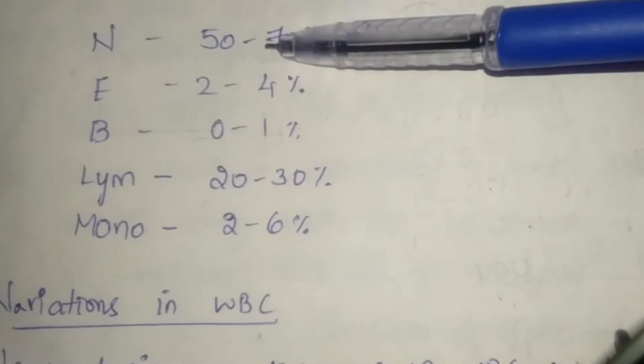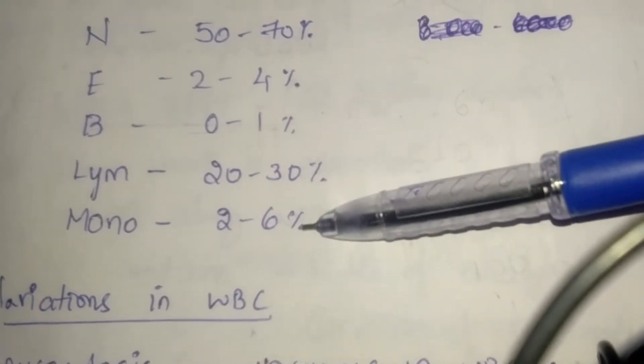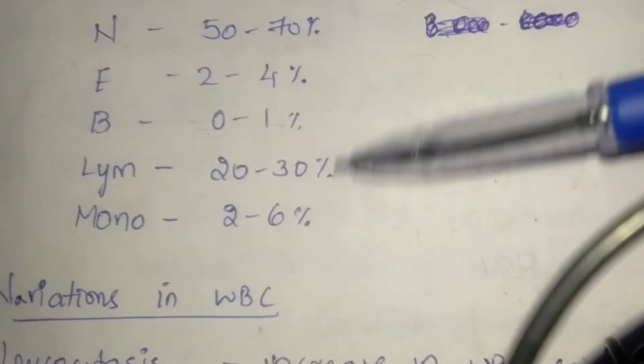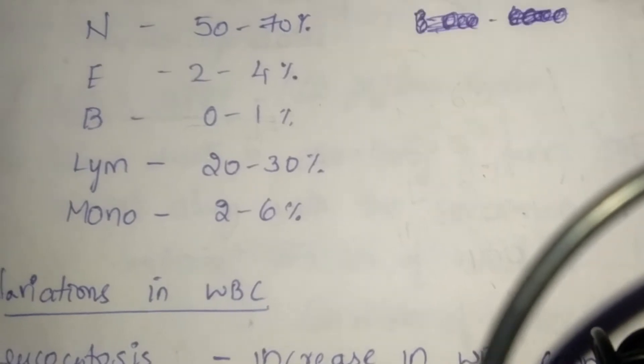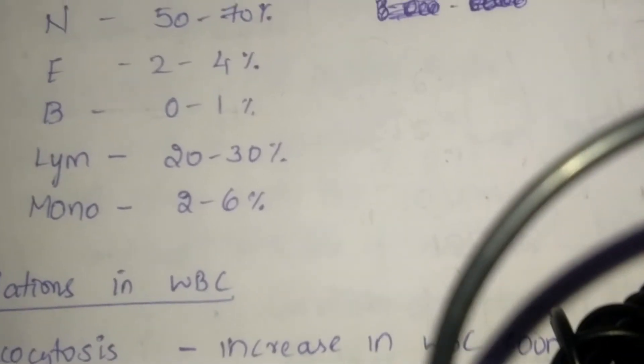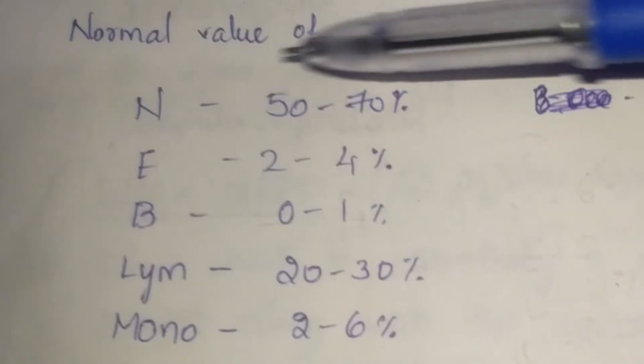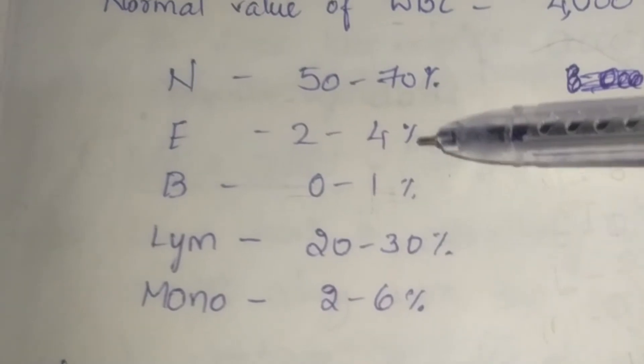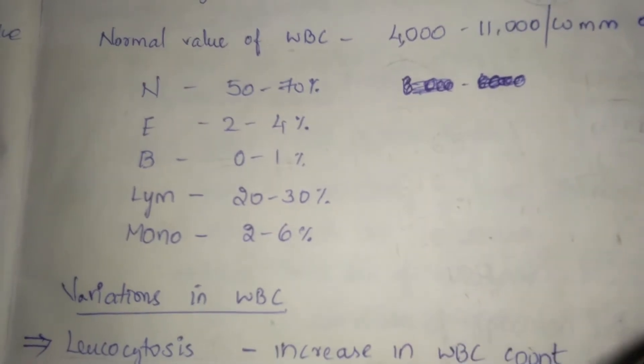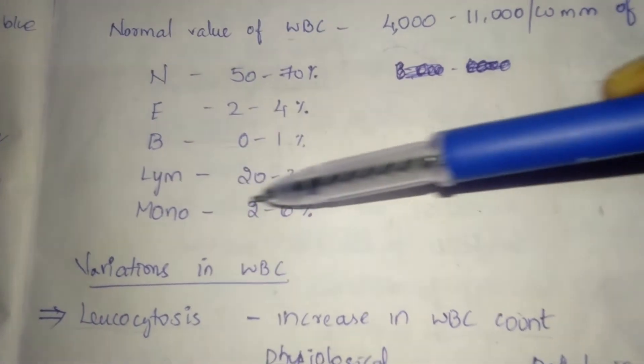Percentage in differential leukocyte count (DLC): different types of WBC cells. Neutrophils 50 to 70 percent, Eosinophils 2 to 4 percent, Basophils 0 to 1 percent, Lymphocytes 20 to 30 percent, Monocytes 2 to 6 percent.